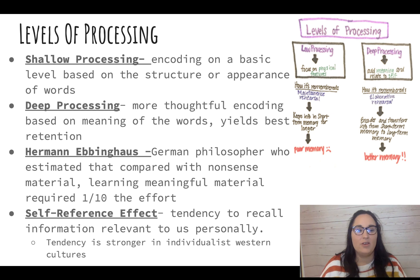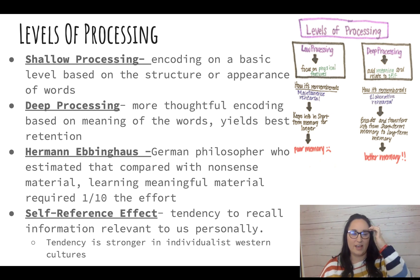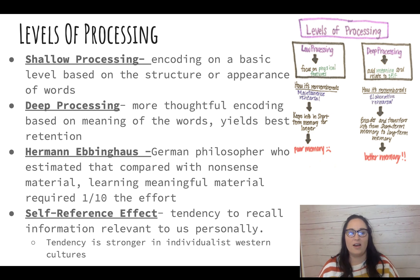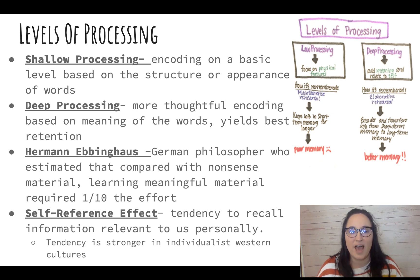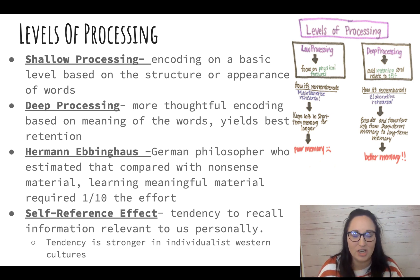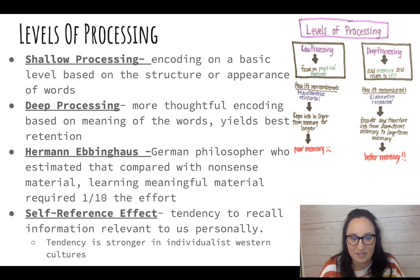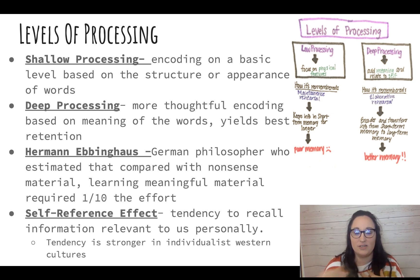When you are studying, think about the level of your processing. Shallow processing is encoding information on a basic level — what does this word look like, how do I spell it? Deep processing is really thoughtfully encoding, thinking about the meaning of the word, and that yields the best retention. Hermann Ebbinghaus, a German philosopher mentioned often in this unit, estimated that compared with nonsense material, learning meaningful material required one-tenth the effort. If it's meaningful, you're so much more likely to remember it. The self-reference effect is the tendency to recall information relevant to us personally, and this is stronger in Western cultures because they are more individualist.